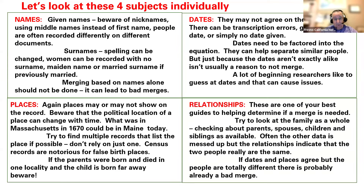Lastly are relationships — that's one I really like to use when available. Sometimes there are records with no relationships and you can't use them. Try to look at the family as a whole, checking parents, spouses, children, and siblings to see if there are clues to help decide if a record needs to be merged. Often the names, dates, and places can be messed up to various degrees, but if all the relationships indicate the two people are really the same, then more than likely they are. If the dates and places agree but the people are totally different, then you probably have a bad merge that's already occurred, and you need to look at that before trying to merge.